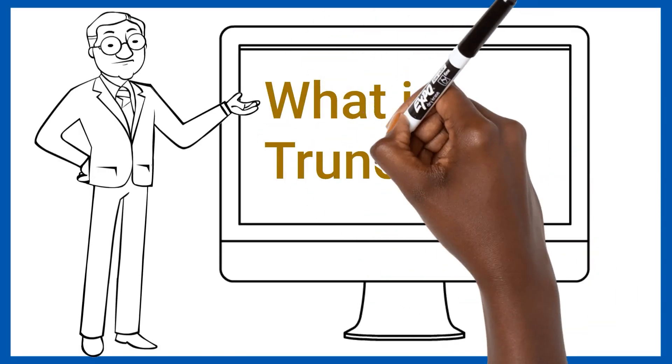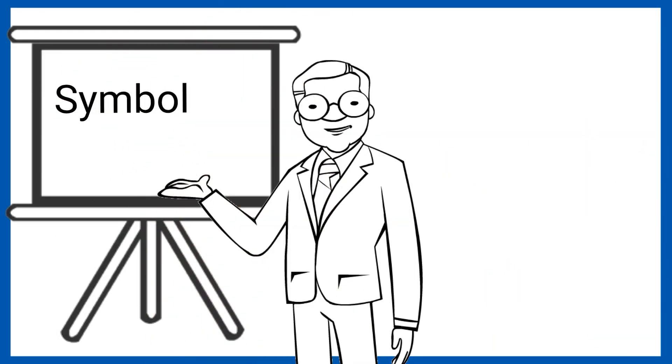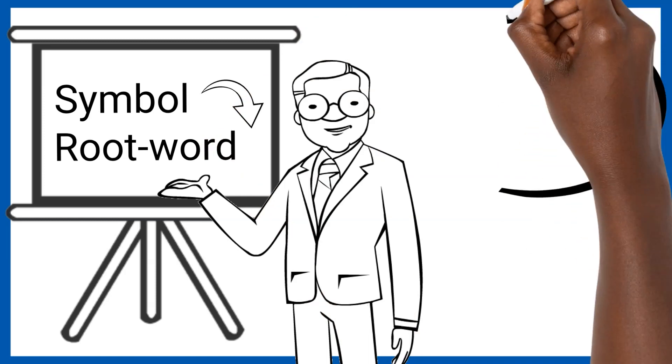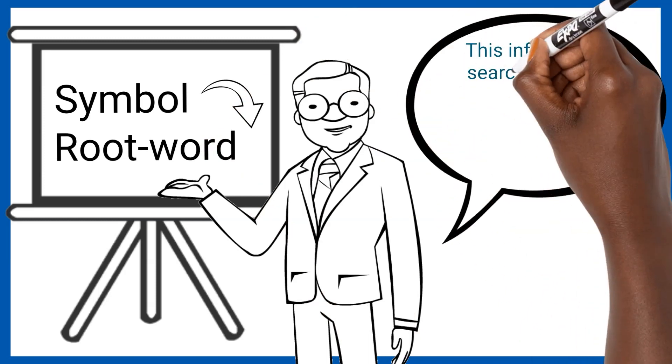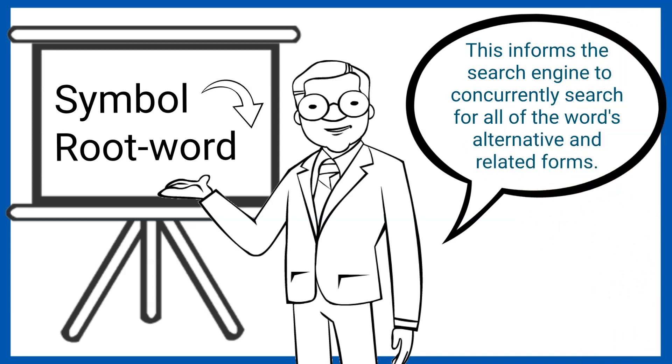What is truncation? Truncation is a method of searching where you insert a symbol after the root of the word. This informs the search engine to concurrently search for all of the word's alternative and related forms. This in return increases the variety of your search results.